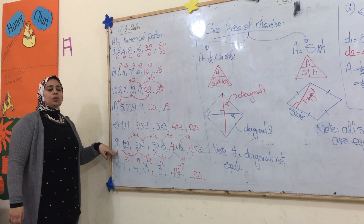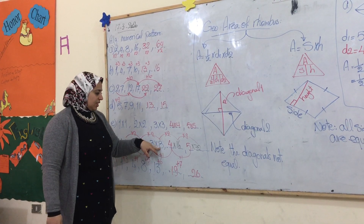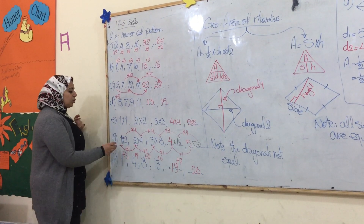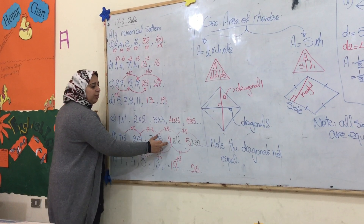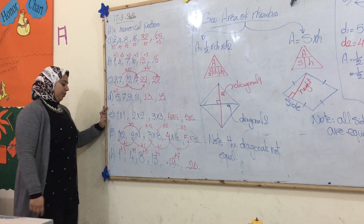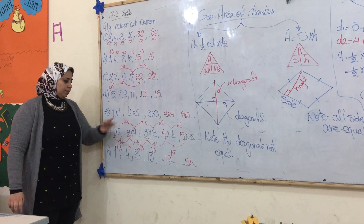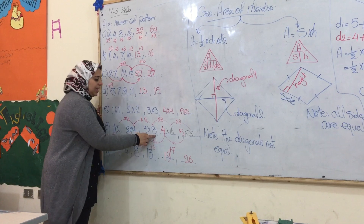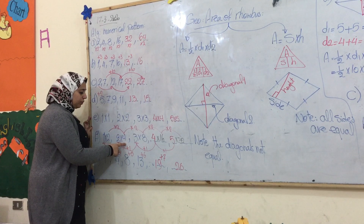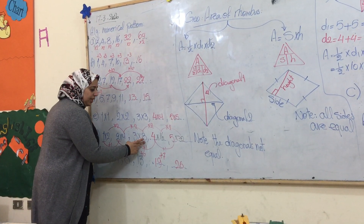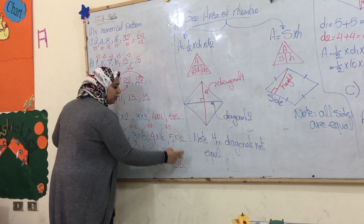This next pattern is also tricky: 1 times 2, 2 times 4, 3 times 8. The first number increases by 1: 1 becomes 2, becomes 3, becomes 4, becomes 5. For the second number, each time we multiply by 2: 2 times 2 equals 4, 4 times 2 equals 8, 8 times 2 equals 16, 16 times 2 equals 32.